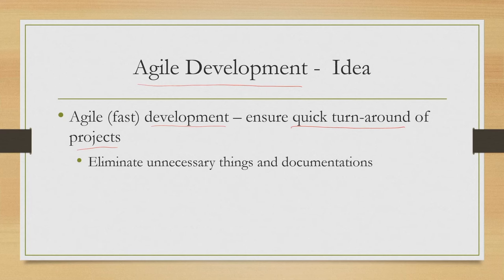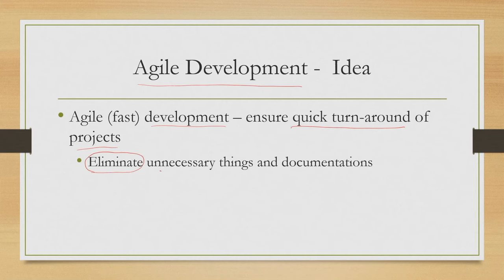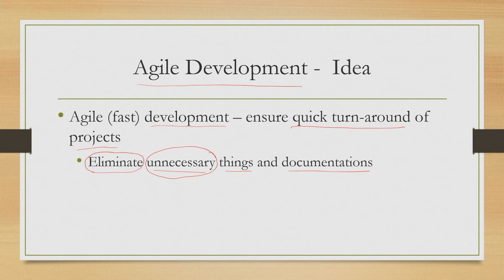As the name suggests, agile means fast — agile development process implies a quick turnaround time of the end product, so quick turnaround of the project. That is the primary objective of this type of developmental activity called agile development process. In order to be agile, the process tries to eliminate unnecessary things and documentation that may be deemed unnecessary at certain stages of development. Although the term 'unnecessary' is used to differentiate traditional and agile processes, it is noted this term is too strict.